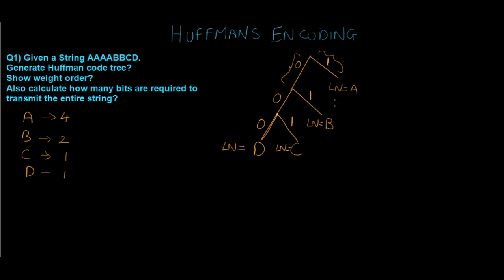Starting from the root node, we calculate the unique binary code for each character by traversing the branches. For d, we traverse three branches all labeled 0, so its code is 000. Similarly, for c the code is 001, for b it is 01, and for a it is 1.